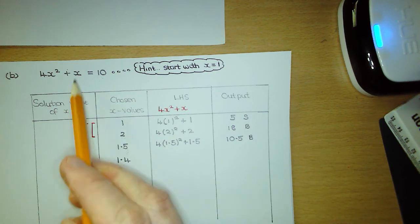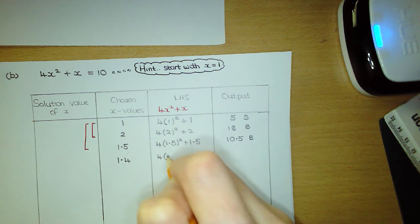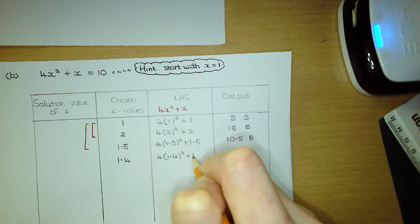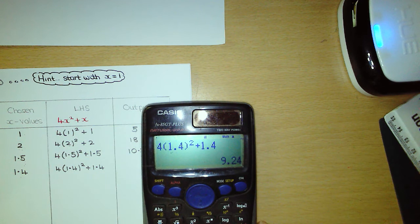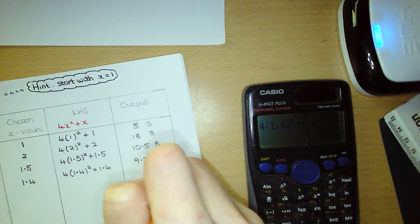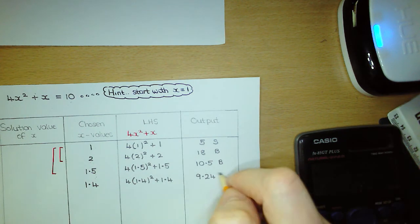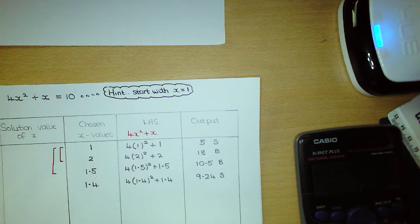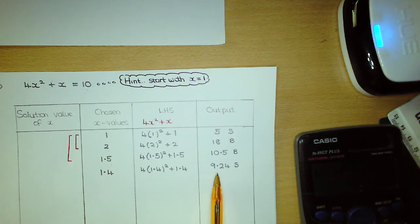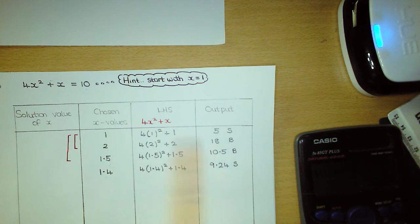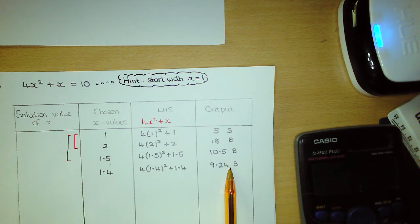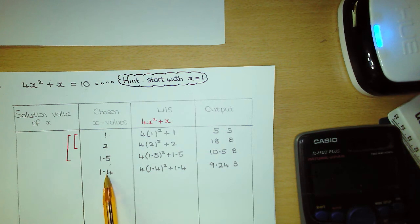We substitute 1.4 into the left hand side of the equation. Go to the calculator, type it in carefully, hit the SD button — that gives us 9.24. The output value of 9.24 is just smaller than the target number, so we re-evaluate the gap. Every time you substitute a new x value and get an output, you need to re-evaluate the gap. The gap used to be between 1 and 1.5; with 1 the output was smaller, with 1.5 it was bigger, but with 1.4 the output is smaller. So we get rid of 1, and the gap is now between 1.4 and 1.5.